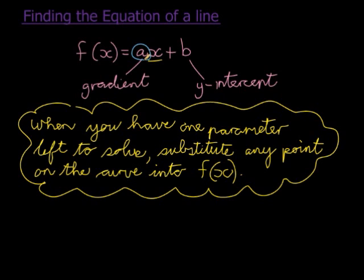Once we have the gradient, we'll use this idea to find the b value, because if we have a, I've got one parameter left to solve. If I have one parameter left to solve, all I need to do is substitute any point on the curve into my function where my a is already found.